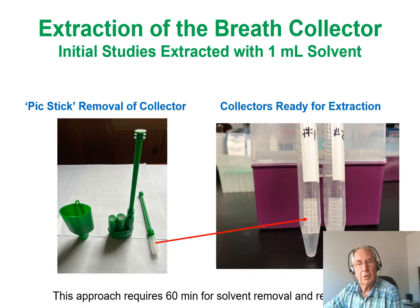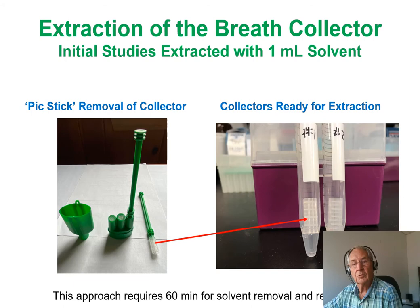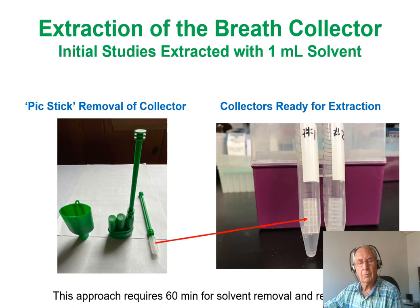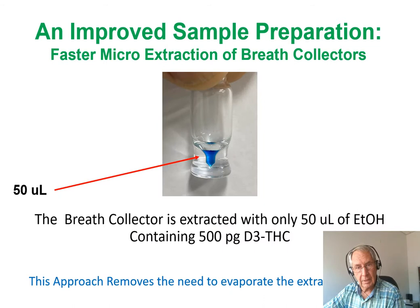Extraction of the breath collector was reported in 2020. In that work, after breath collection, the collector was pushed into a conical test tube and one milliliter of methanol was added for extraction. After extraction, the collector was removed and excess solvent was removed over about an hour by vacuum centrifugation. That step — concentrating to dryness and reconstituting for LC-MS — made it impractical for roadside or on-site testing. The purpose of this work was to perform microextraction with a much smaller solvent volume so that blow-down was unnecessary, making a much shorter technique.